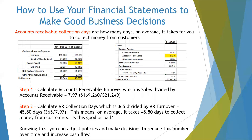Accounts receivable collection days are how many days on average it takes you to collect money from customers. This is a great indicator — you can simply Google the formula. It's an indicator of how quickly your customers pay you, and the goal of any business owner should be to get paid as quickly as possible because that increases cash flow. On average in this example, it takes 45.8 days to collect money. Is this good or bad? We don't know — you need to track this over time. But knowing this, you can adjust your policies and make decisions to reduce this number and potentially increase your cash flow.